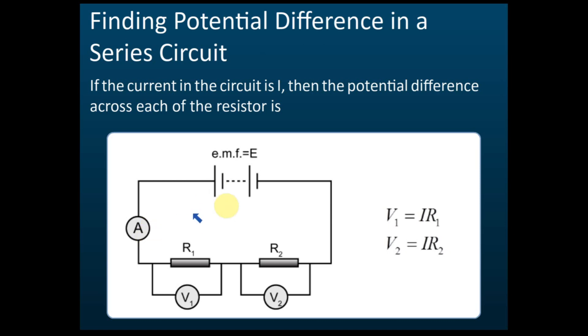Find the current or the readings of the ammeter in the circuit first. After you get the current, then you can find the potential difference easily. That's the key to find potential difference in a series circuit - you must find the current first.